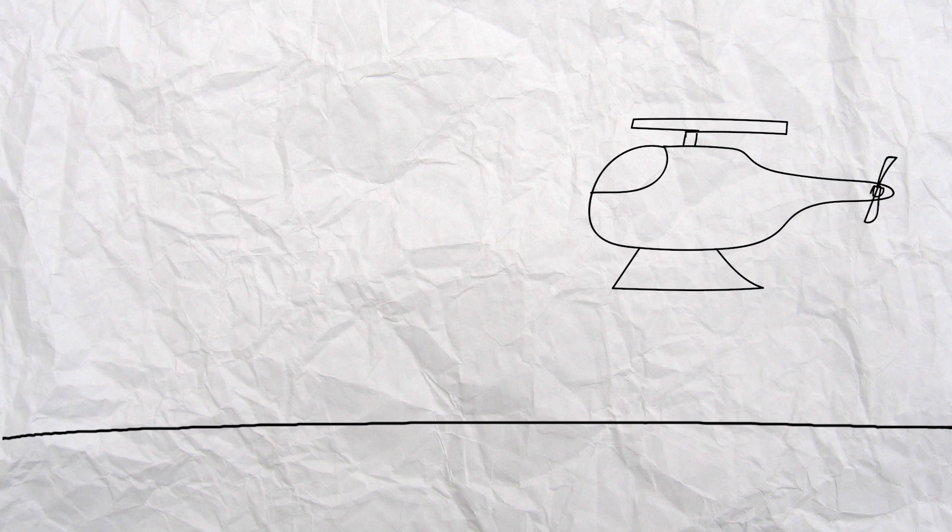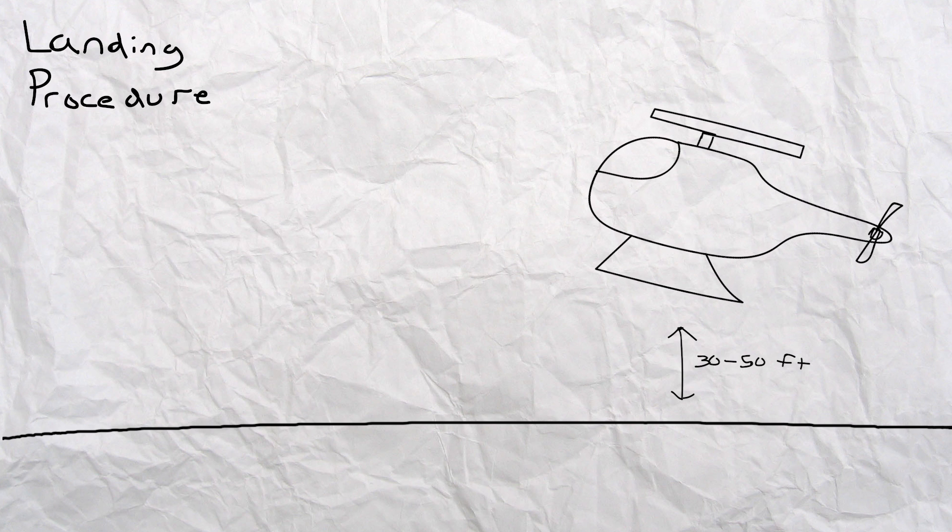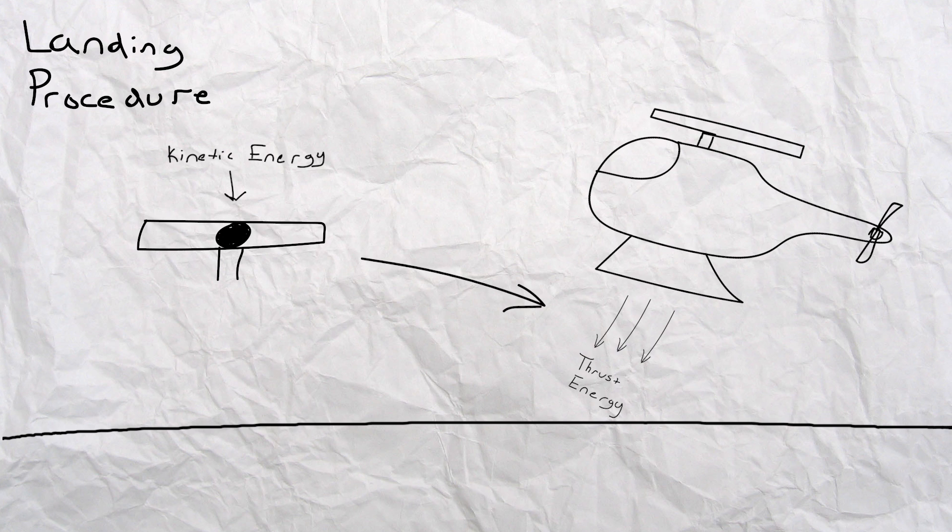As the helicopter continues its descent and nears the ground, it is time for the pilot to perform the landing procedure. When the helicopter is about 30 to 50 feet off of the ground, the pilot pulls back the collective pitch, flaring the aircraft's nose. He does this so that the kinetic energy keeping the rotary wing moving during flight can be transformed into thrust energy to slow the helicopter down to a safe landing speed.